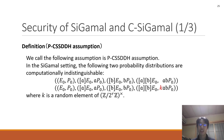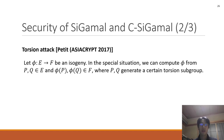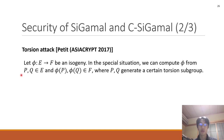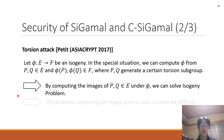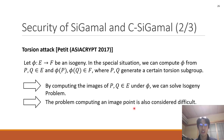But we have an example which makes this idea seem true. This is the torsion attack. Let φ be an isogeny. In a special situation, we can compute φ from the points P, Q, and φ(P), and φ(Q), where P and Q generate a certain torsion subgroup. In other words, by computing the images of P and Q under φ, we can solve the isogeny problem. As you know, the isogeny problem is hard to solve. So the problem of computing an image point is also considered difficult.